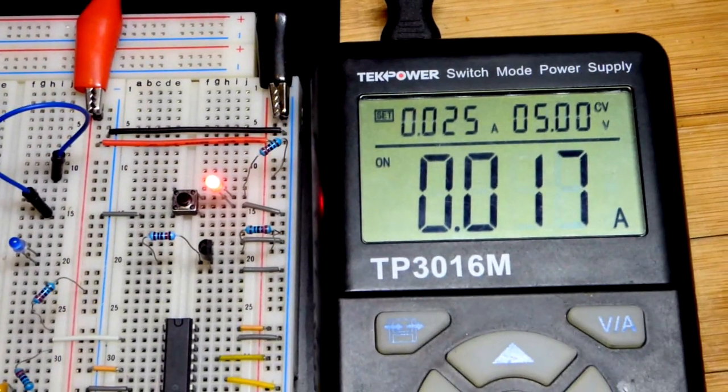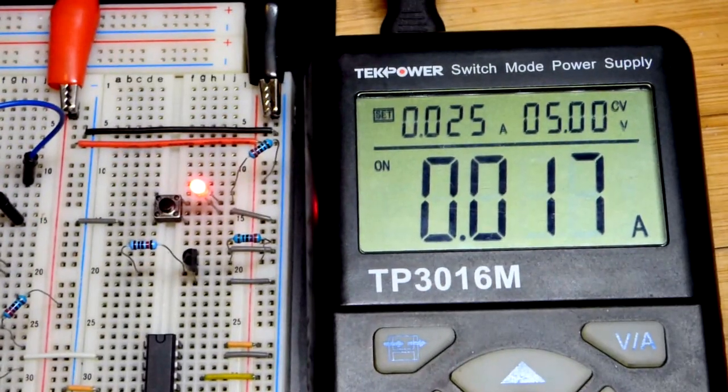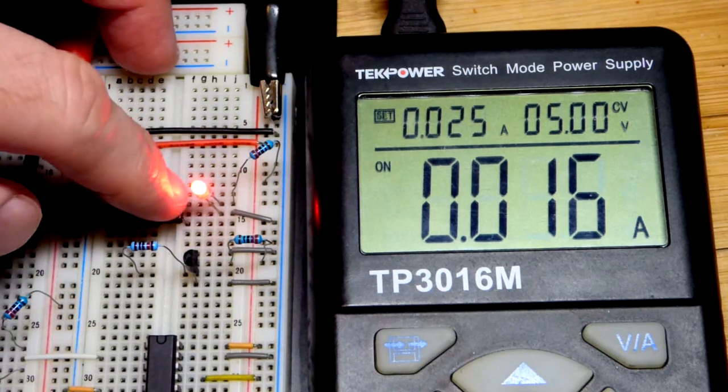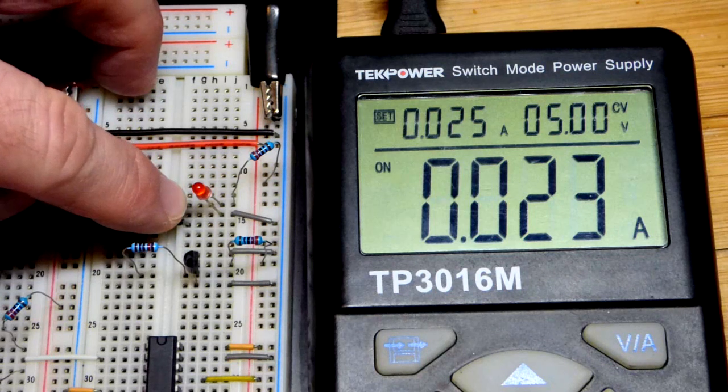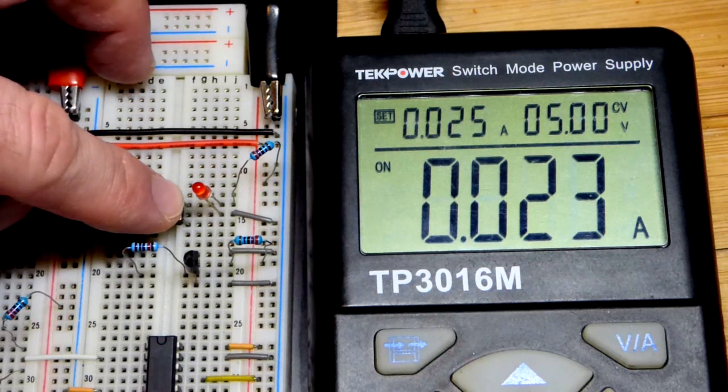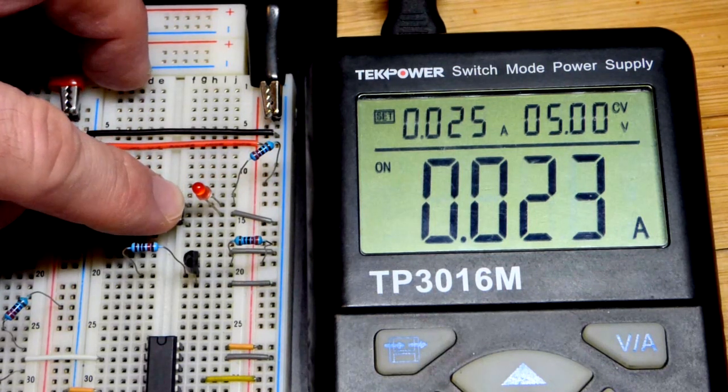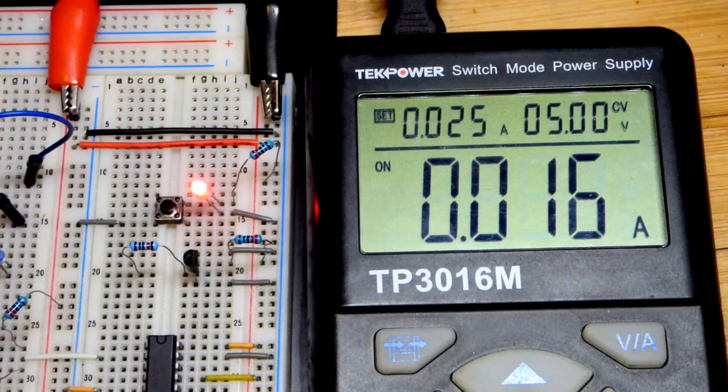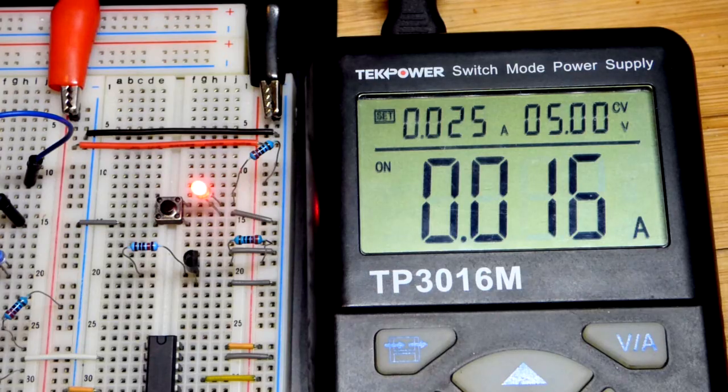Right now the switch is off and the LED is on. The LED would be on whether the switch is there or not as we saw earlier. But if I turn the switch on, now the LED turns off. So when the switch is on, LED off. When the switch is off, LED is on. It's an example of a NOT gate.